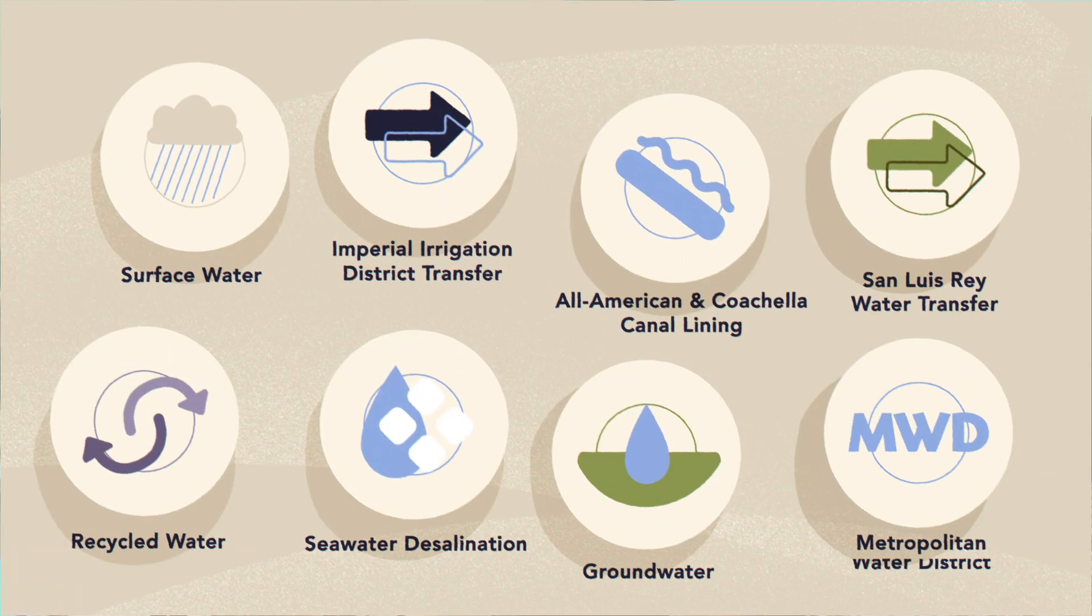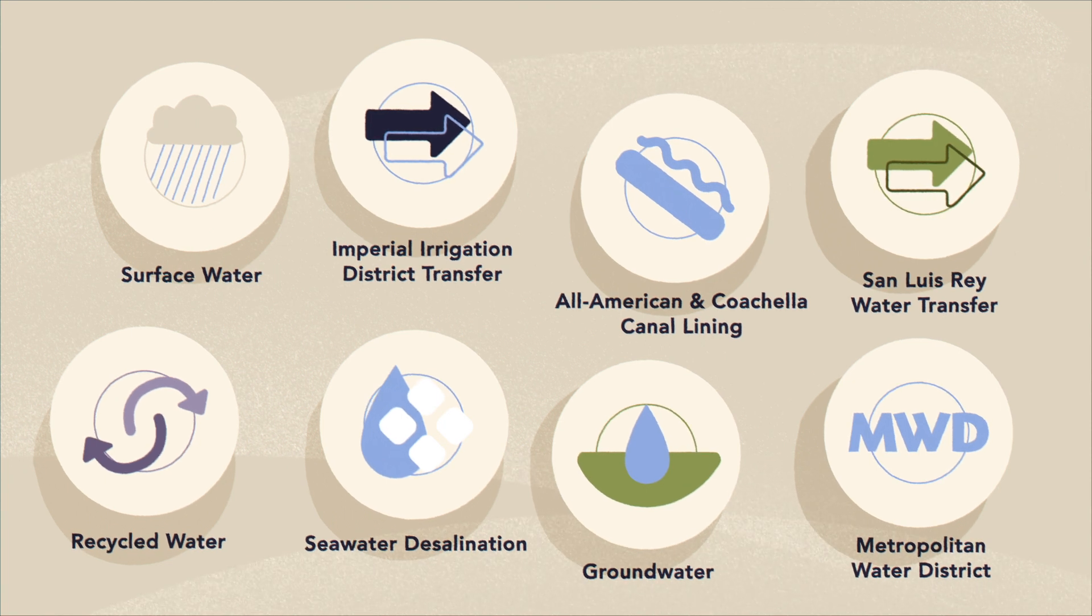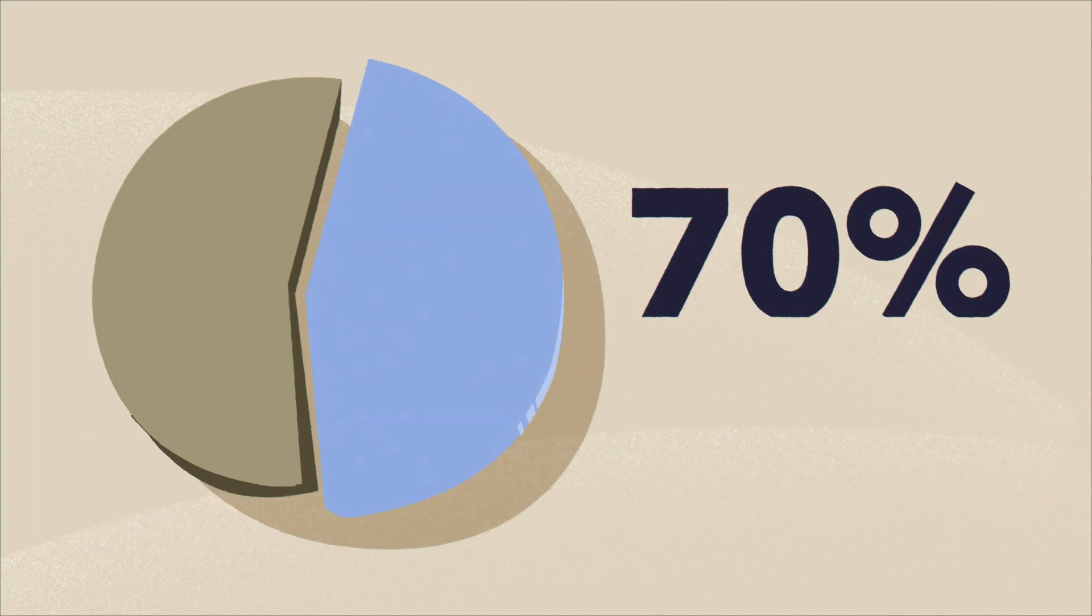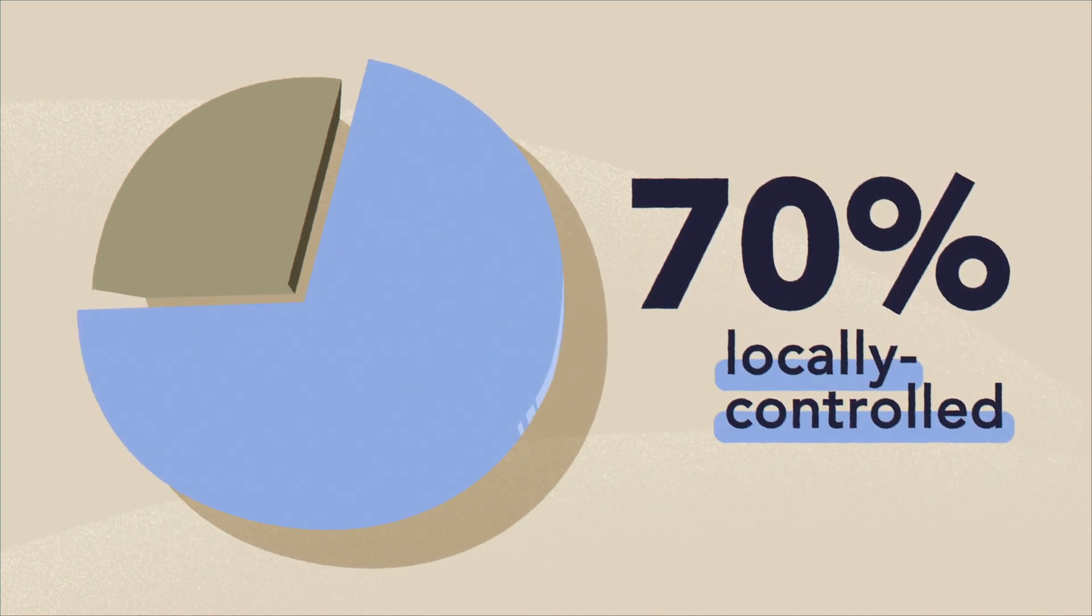the Water Authority began to diversify its water supply mix. Today, our water supplies include multiple sources, and about 70% of the region's water supplies are from these locally controlled water sources, with a planned increase to that supply in the future.